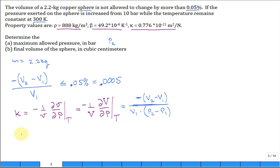We can unravel this. The final pressure minus the initial pressure equals minus V2 minus V1 divided by V1, times 1 over kappa. To find the final pressure P2, it will be greater than P1 by that amount.